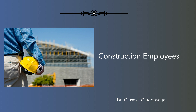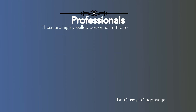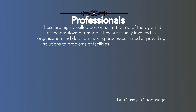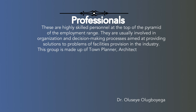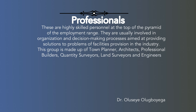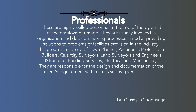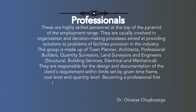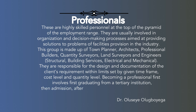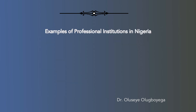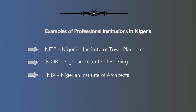Construction employees. The industry also employs diverse people, which can be categorized as follows. Professionals: these are highly skilled personnel at the top of the pyramid of the employment range. They are usually involved in organization and decision-making processes aimed at providing solutions to problems of facilities provision in the industry. This group is made up of town planners, architects, professional builders, quantity surveyors, land surveyors and engineers — structural, building services, electrical and mechanical. They are responsible for the design and documentation of the client's requirements within limits set by a given time frame, cost level and quantity level. Becoming a professional first involves graduating from a tertiary institution, then admission, after passing all the necessary examinations and interviews, into a professional institution as a corporate member. Examples of such professional institutions in Nigeria include NITP (Nigerian Institute of Town Planners), NIOB (Nigerian Institute of Building), NIA (Nigerian Institute of Architects), and others.